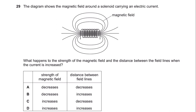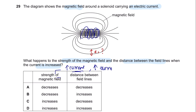Question 29. The diagram shows the magnetic field around a solenoid carrying an electric current. What happens to the strength of the magnetic field and the distance between field lines when the current is increased? The strength of a magnetic field can be increased by increasing current or increasing the number of turns. When you increase current, the strength increases and the field lines become closer together, indicating a stronger magnetic field. So the answer is D.